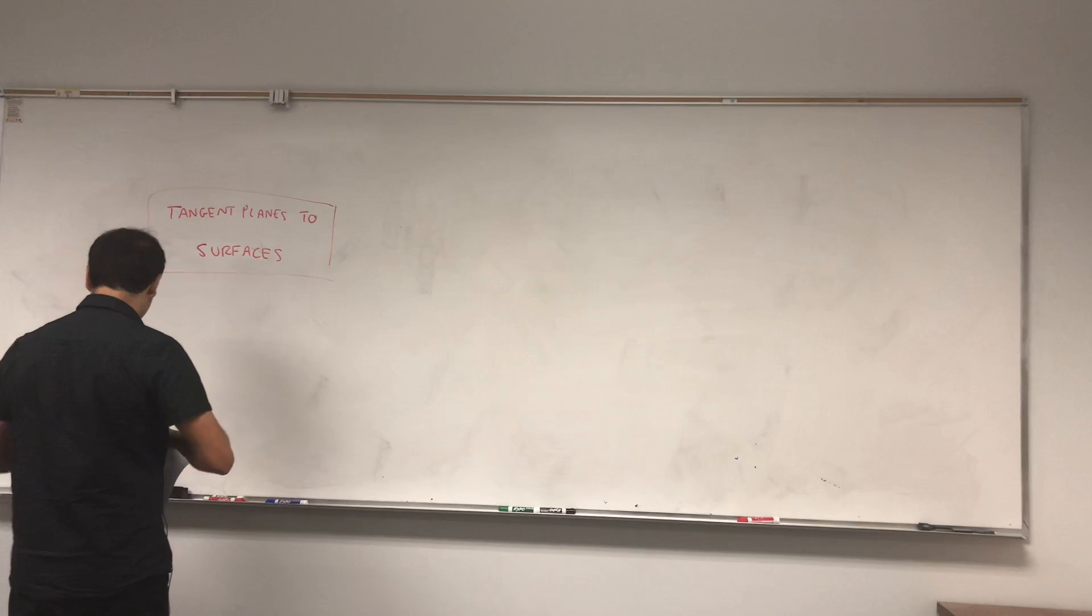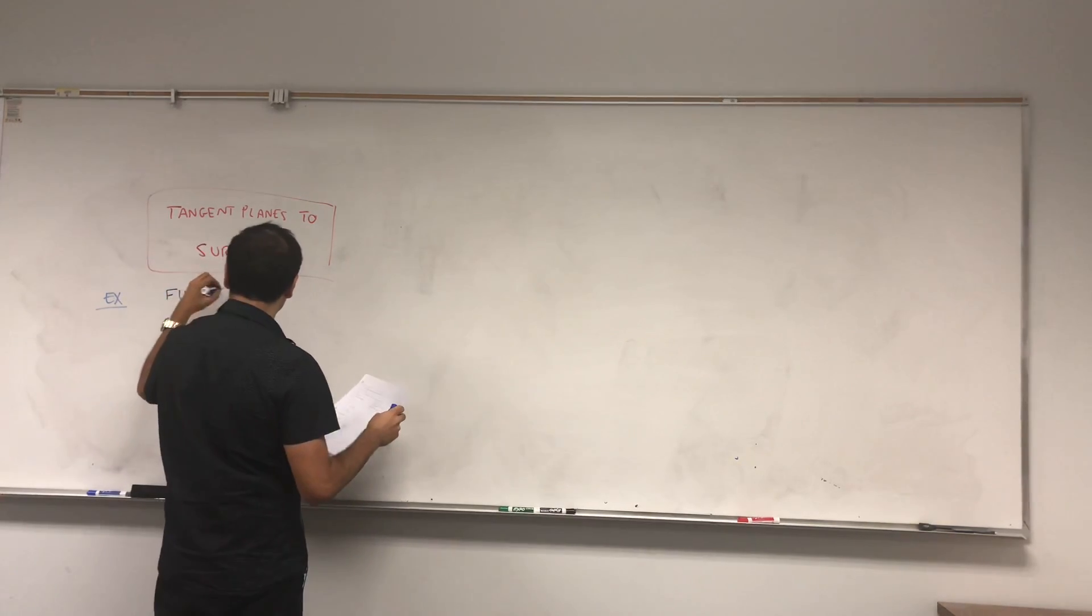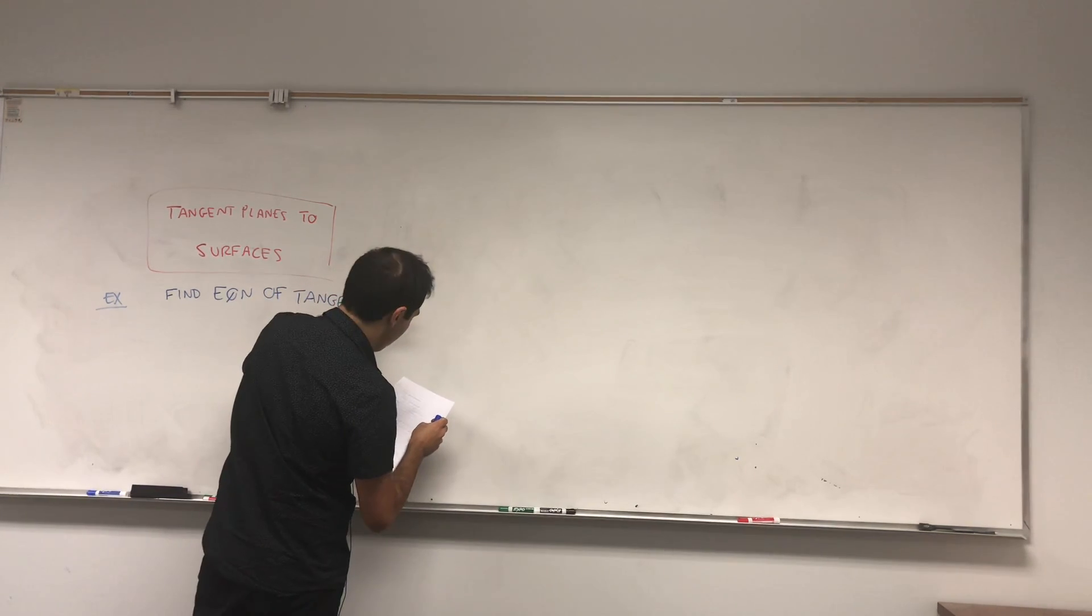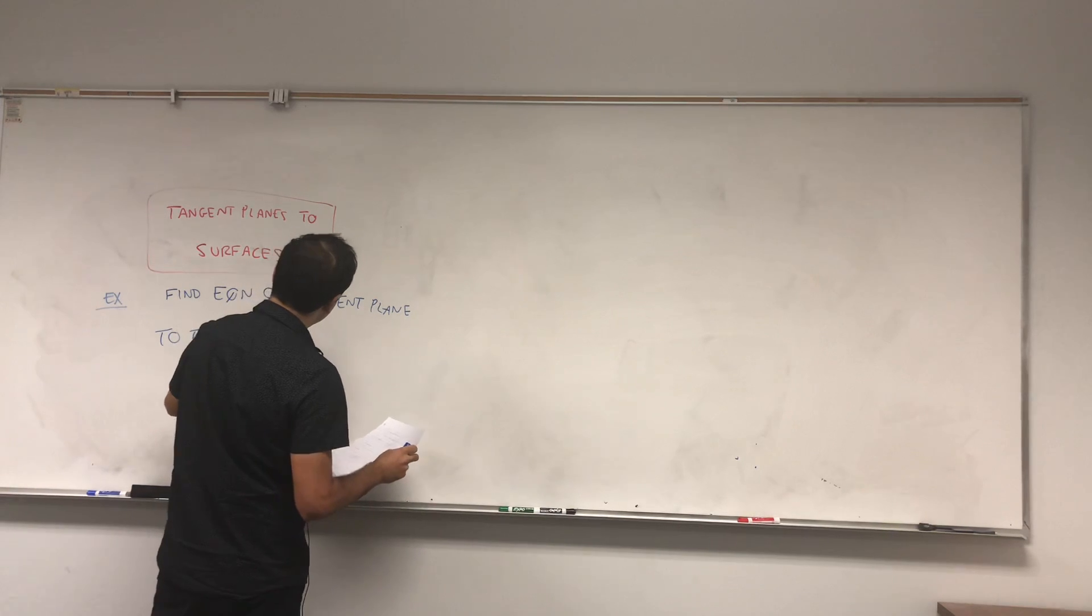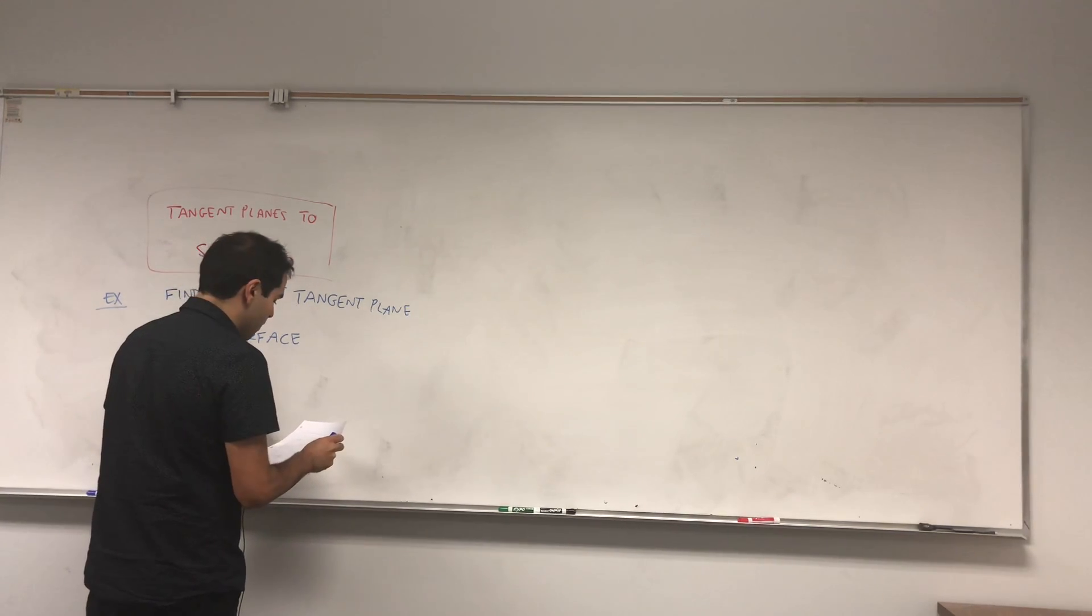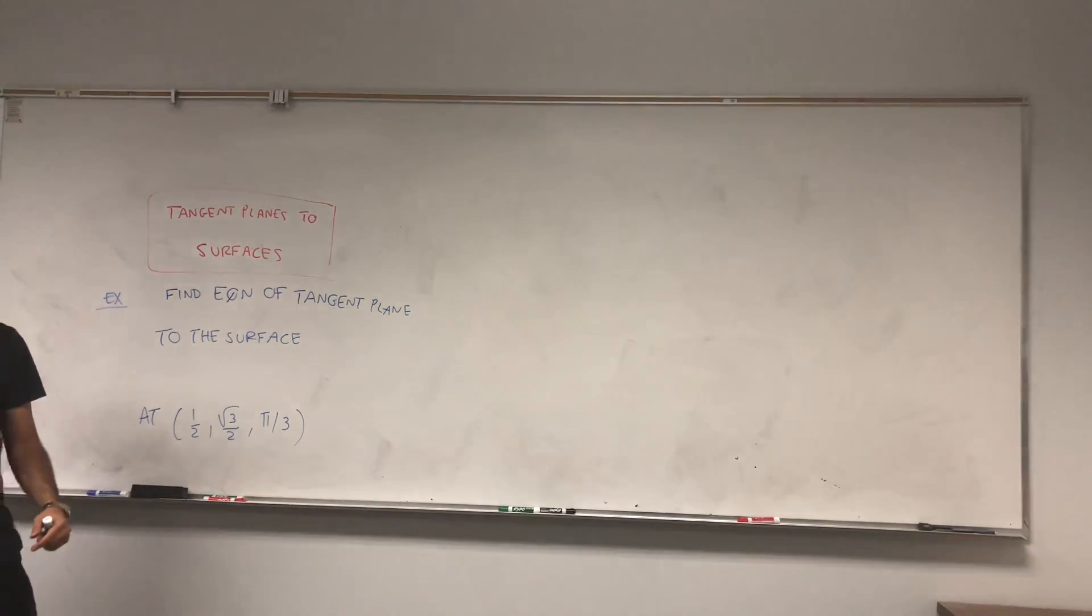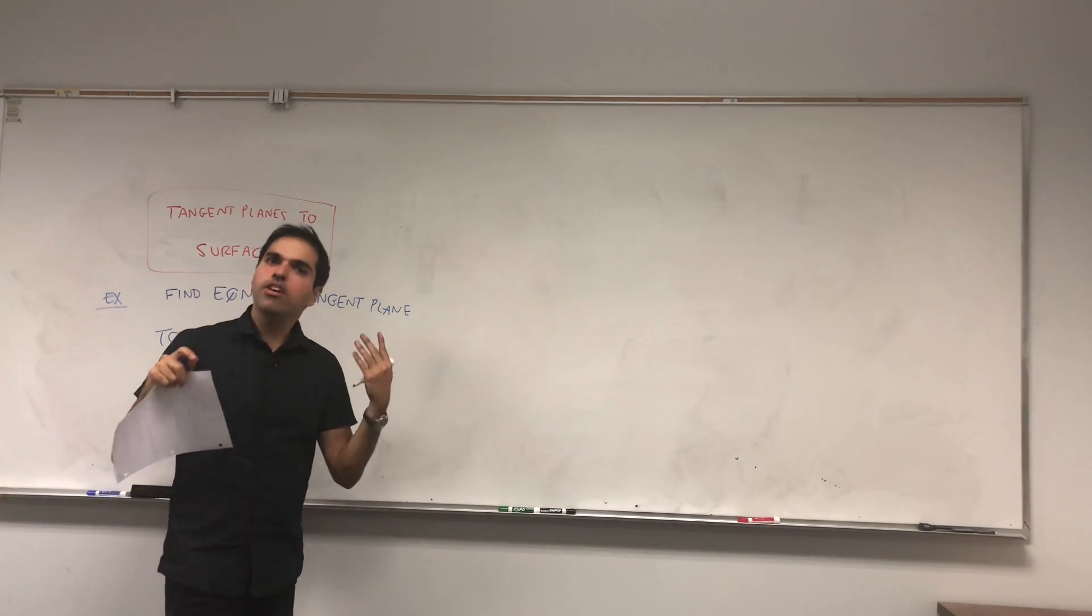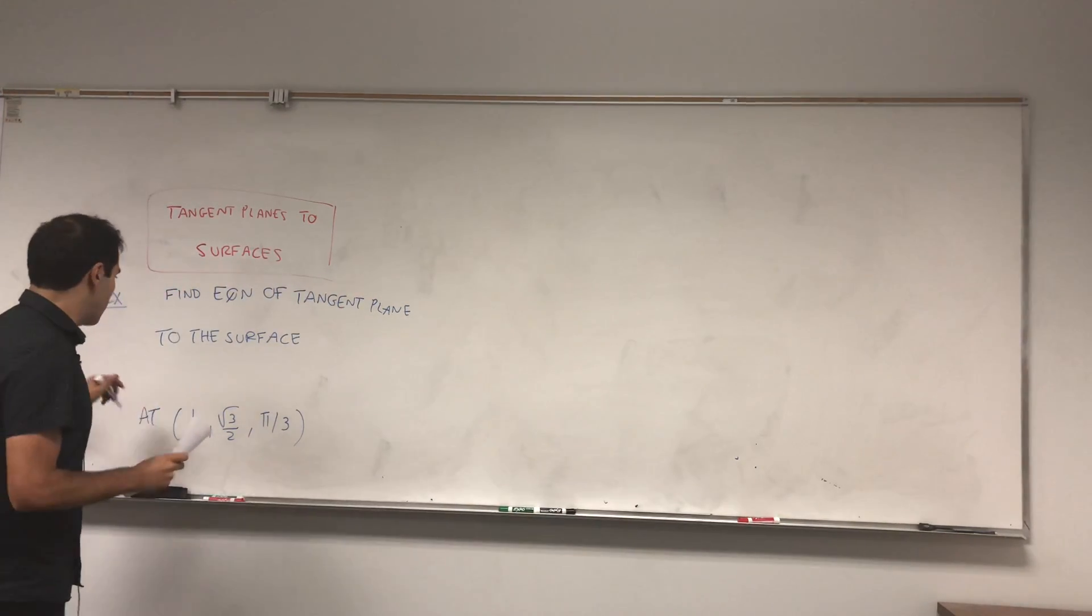So indeed, let's find basically the equation of the tangent plane to the surface, I'll give you an equation of the surface, at the point one-half square root of three over two, and pi over three. So here's an important thing to understand. Curves are one-dimensional, so you can parametrize them with one variable. Now surfaces, they become two-dimensional. That's why you need two variables to describe them, or two variables to parametrize them.